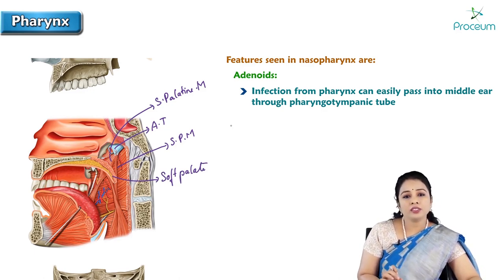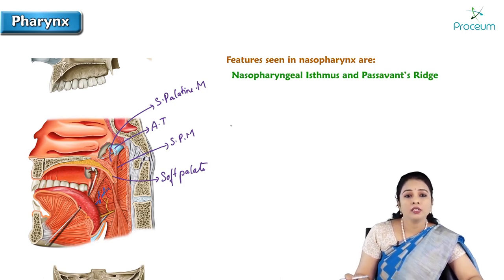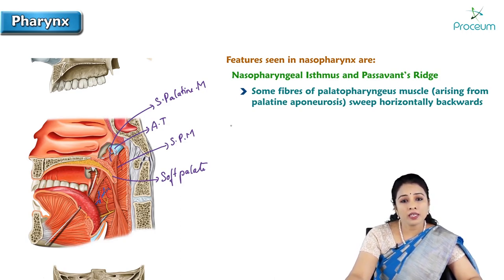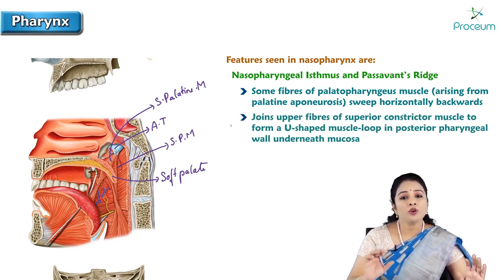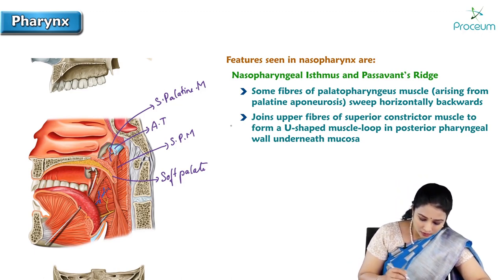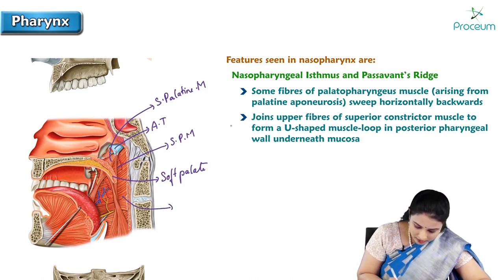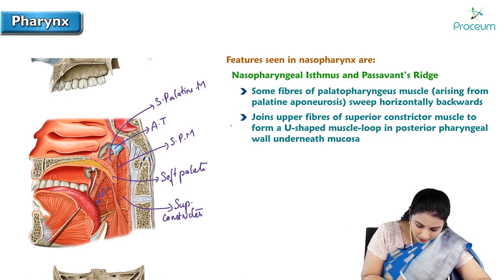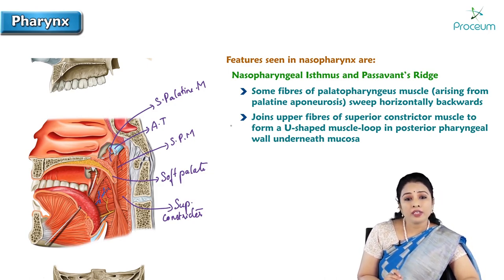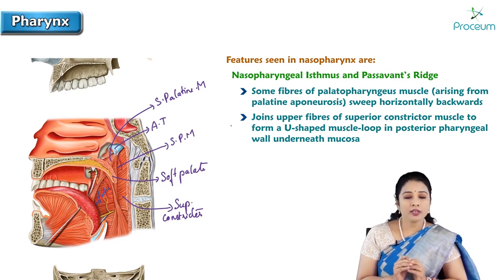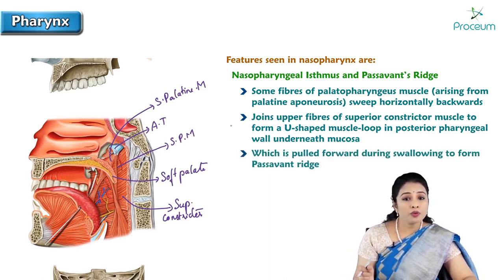The next important feature is the nasopharyngeal isthmus or Passavant's ridge. Some fibers of the palatopharyngeal muscle arising from the palatine aponeurosis sweep horizontally backwards and join the upper fibers of the superior constrictor, forming a U-shaped muscle loop in the posterior pharyngeal wall underneath the mucosa. Here on each side you can see the superior constrictor. This palatopharyngeus muscle sweeps into the superior constrictor making a U-shaped muscle loop, which is pulled forward during swallowing to form an elevation called Passavant's ridge.